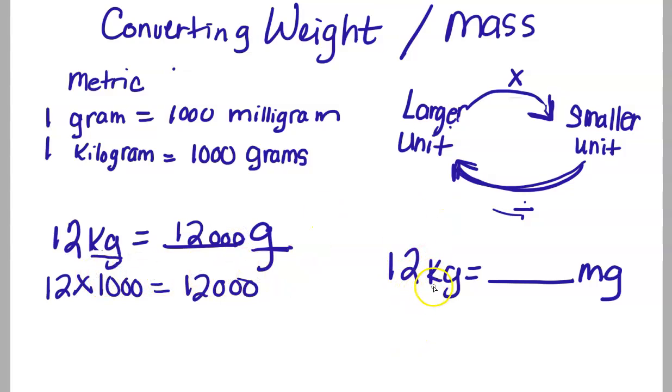Now sometimes you have to go from a large unit to a very small unit. In this case, we have 12 kilograms equals how many milligrams. We're going from a larger to a smaller unit. But I have to consider not only how many milligrams are in a gram, but then again, how many grams are in a kilogram.